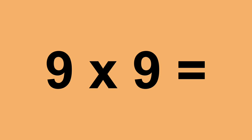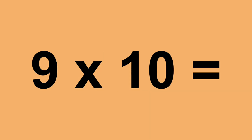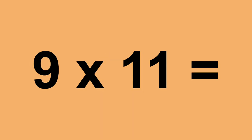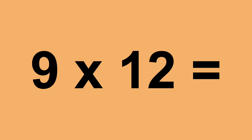Nine times nine equals eighty-one. Nine times ten equals ninety. Nine times eleven equals ninety-nine. Nine times twelve equals one hundred and eight.